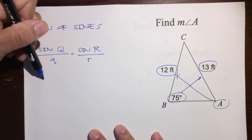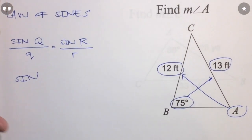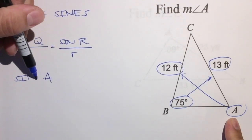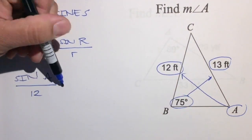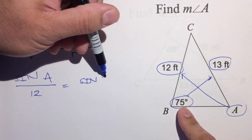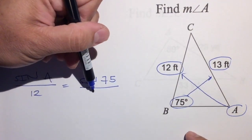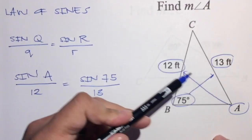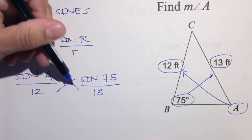So let's plug this in. We're going to write the sine of A — since we're trying to find angle A — over its opposite side, which is 12, equals the sine of 75 degrees over its opposite side, which is 13. Angle over opposite side, angle over opposite side — easy peasy.